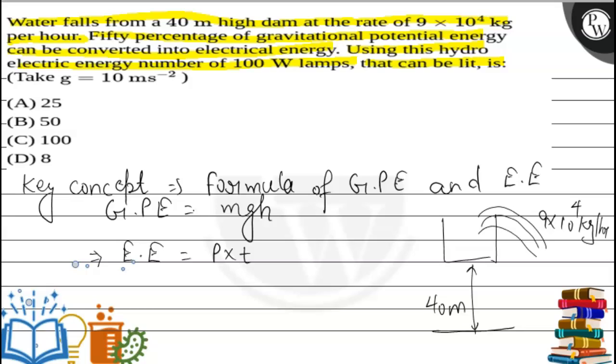The relation between potential energy and electrical energy is given: 50% of gravitational potential energy can be converted into electrical energy. If gravitational potential energy is U, then from the formula U = mgh.